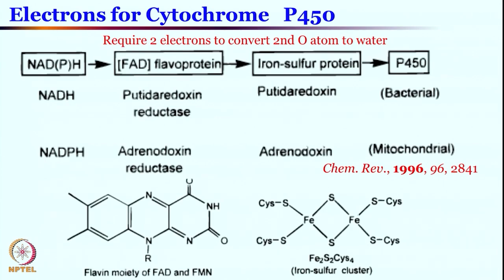Cytochrome P450 requires 2 electrons to convert the second oxygen atom of the oxygen molecule into water. Where are those 2 electrons coming from? They are coming through a chain of events — essentially the iron-sulfur cluster that we discussed in electron transfer proteins is the one which delivers the electrons to cytochrome P450. But before that, these electrons hop in from NADPH, then to this flavoprotein, then to iron-sulfur protein. All of them are acting as electron transfer sites, and the electron hops finally to cytochrome P450.